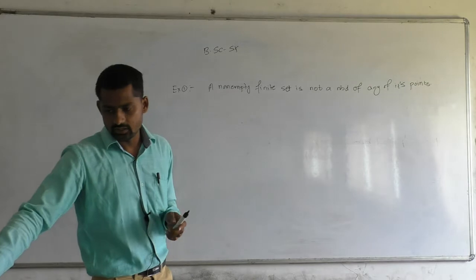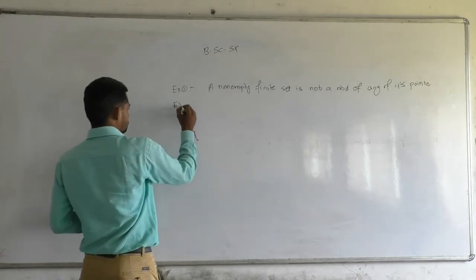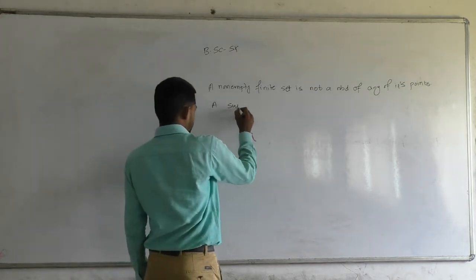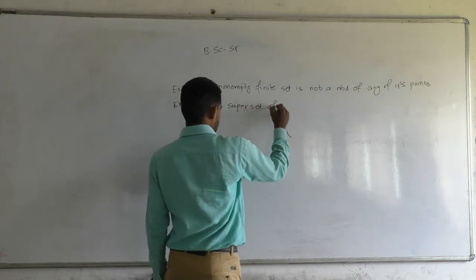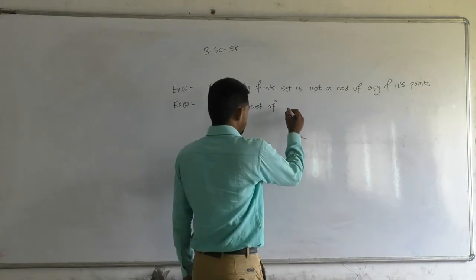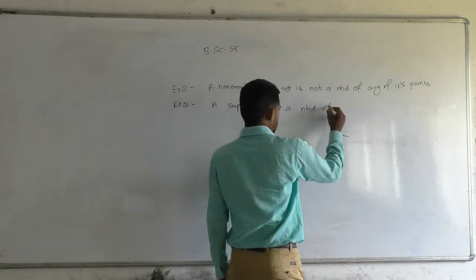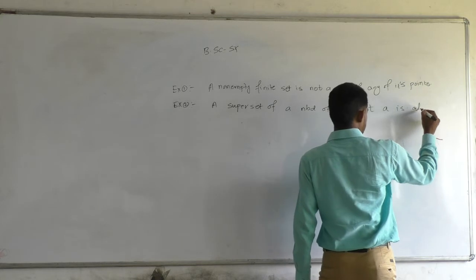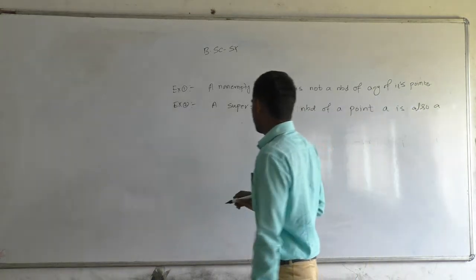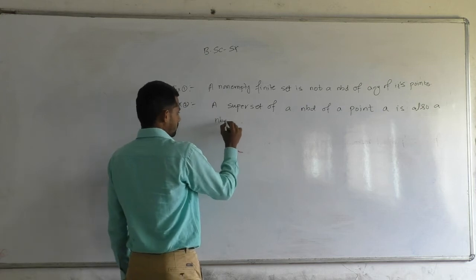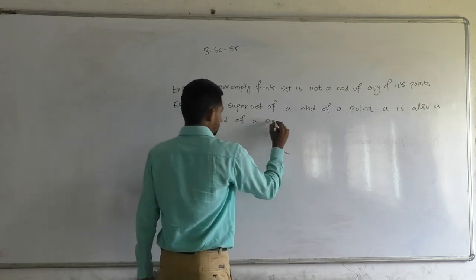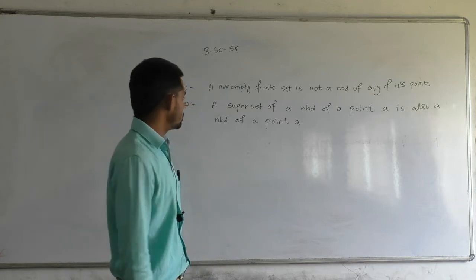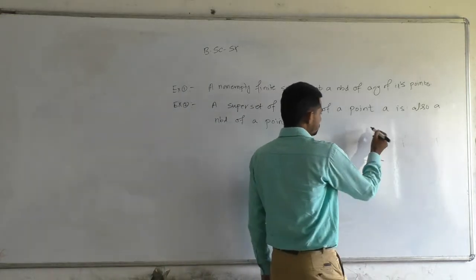Example two: a superset of a neighborhood of a point a is also a neighborhood of a point a. Recall that if A is a subset of B, then B is called a superset of A. So we need to show that if N is a neighborhood of point a, and N is contained in M, then M is also a neighborhood of a.